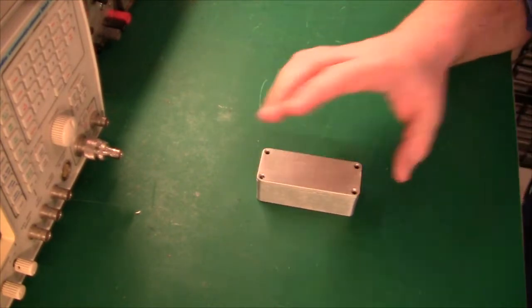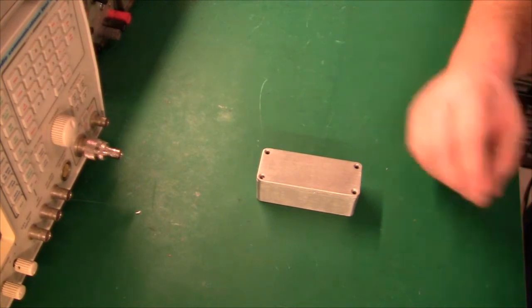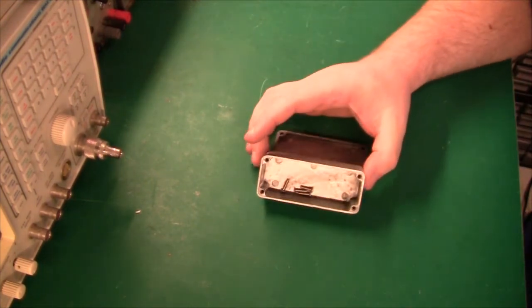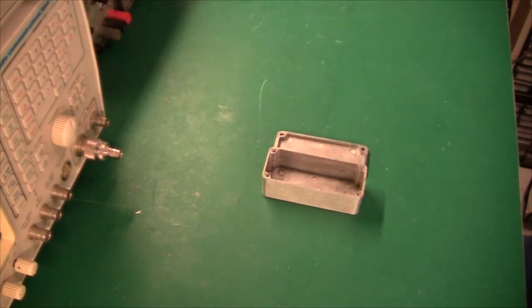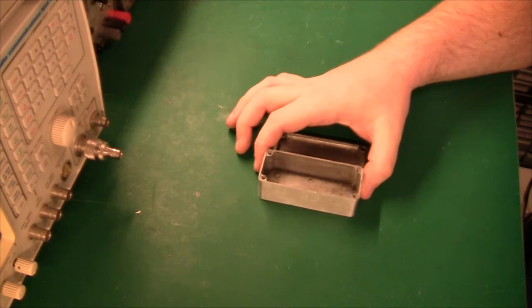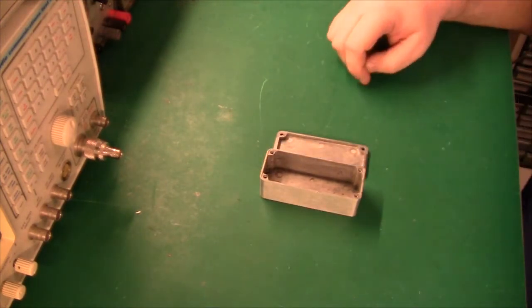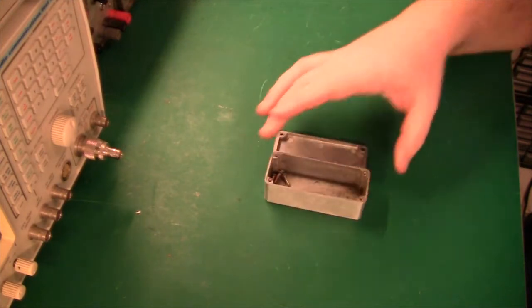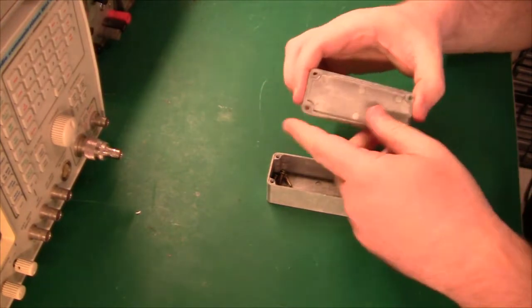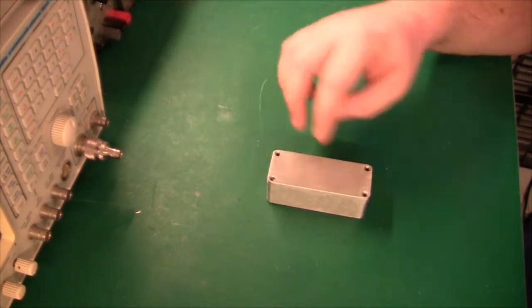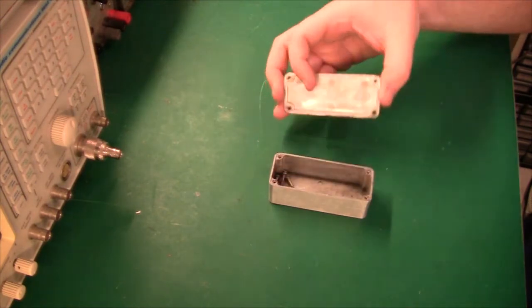This one has part number 1590A and this is the absolute minimum size I think is useful. This one is 92x38x31mm and basically you use stomp boxes like this for RF design because of the lip down here and because the whole thing is aluminum. Once you screw the lid on here, it's basically RF tight.